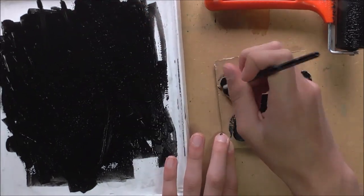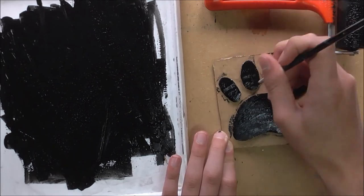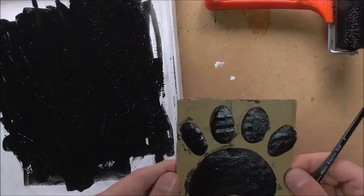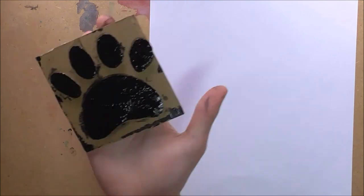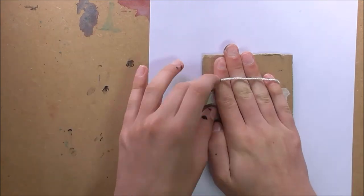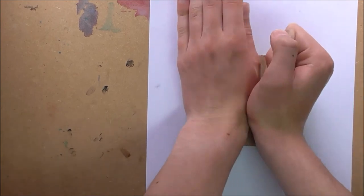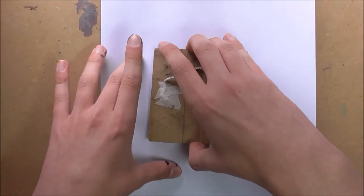So once you have your stamp fully inked, this is the time to actually print. You want to get your bit of paper, put the stamp face down, and press down really hard. You want to really make sure that there is good contact between the stamp and the paper.